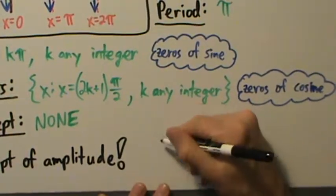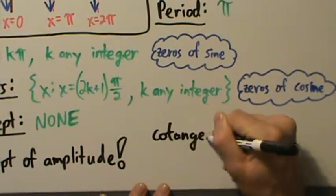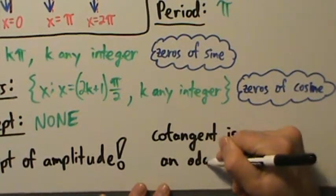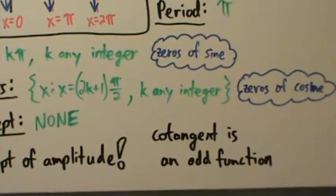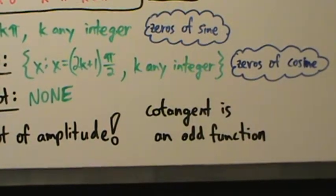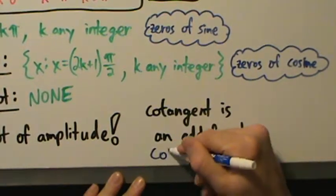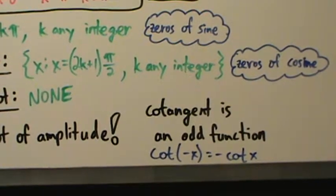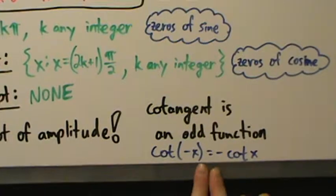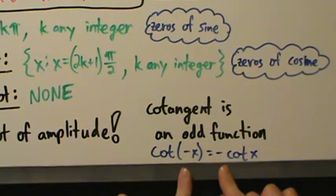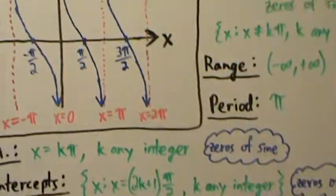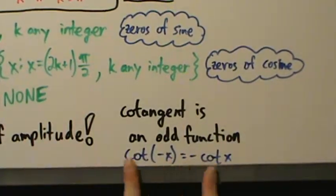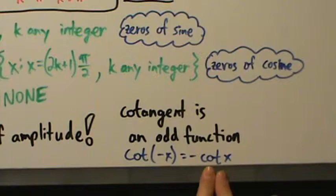One last thing worth mentioning: just like the tangent function, cotangent is an odd function. What that means algebraically is that cotangent of negative x equals negative cotangent of x. We've used this fact before when evaluating cotangent at certain points on the unit circle.